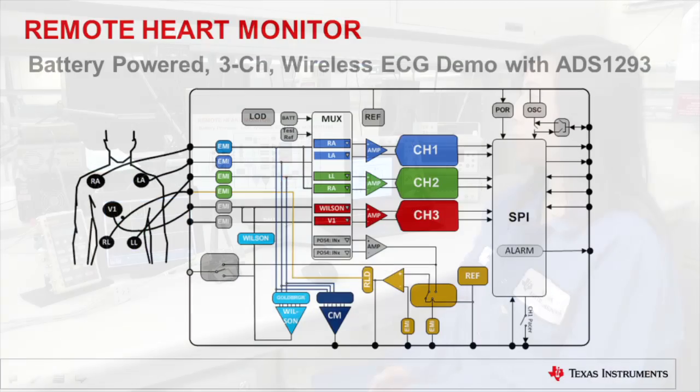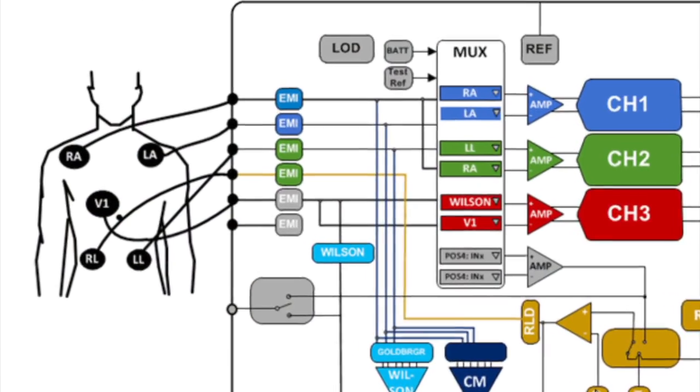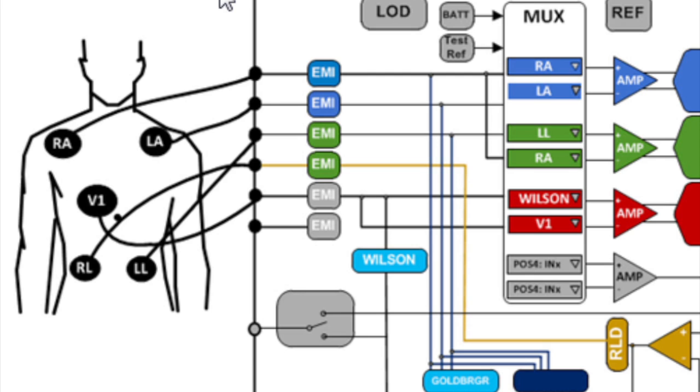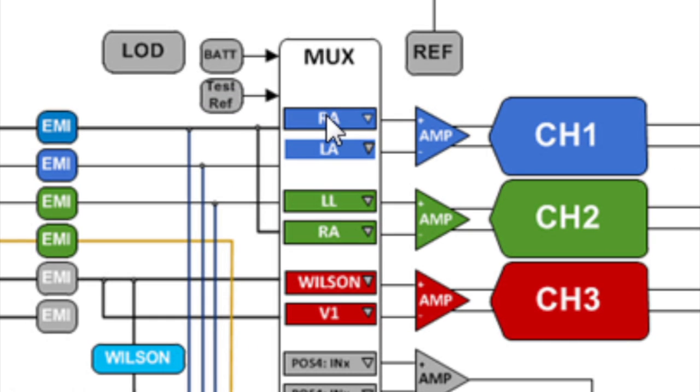But first let's take a look at the ADS1293 block diagram. As you can see on my screen, we have a 5-lead application and to the left we have EMI filters at all the inputs. The EMI filter is designed to reject the RF transmitter such as the one coming from your cell phone, so this is a perfect portable application device. To the right is a flexible routing switch that will allow you to connect any of the inputs to the input of the instrumentation amplifier.